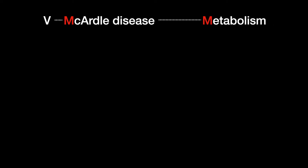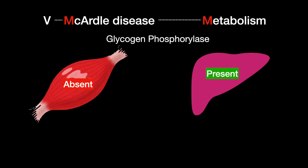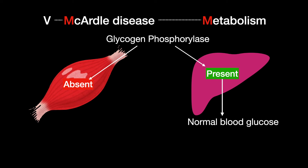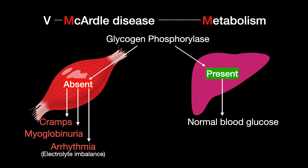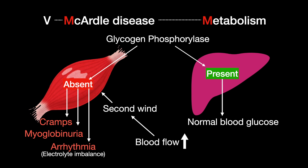McArdle disease is the type 5 glycogen storage disease, caused by a deficiency in skeletal muscle glycogen phosphorylase. Since liver glycogen phosphorylase is unaffected, blood glucose levels remain normal. Upon exercise, the muscles cannot break down glycogen. Patients will experience muscle cramps, myoglobinuria, arrhythmia from electrolyte abnormalities, and a second wind because blood flow increases to the muscles.